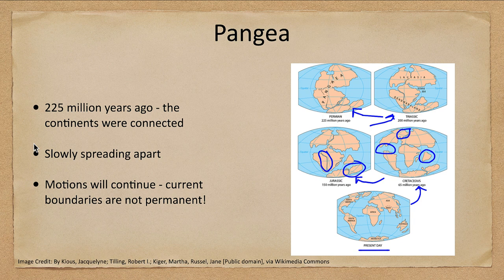As it goes, the spreading across the Atlantic Ocean continues — it gets larger and larger — and the Pacific Ocean will get smaller as the plates slowly move across. The motion is only centimeters per year, so it's not easily noticeable, but over millions of years it makes a massive difference in where the actual boundaries are going to be.